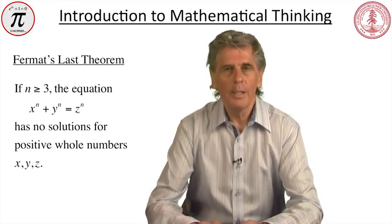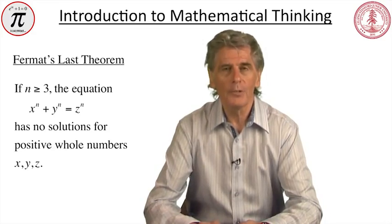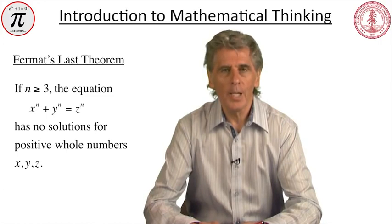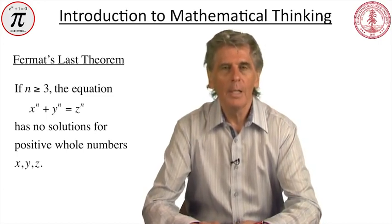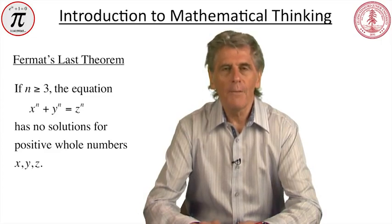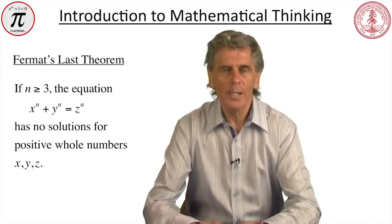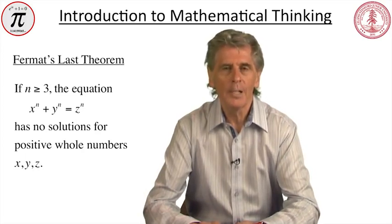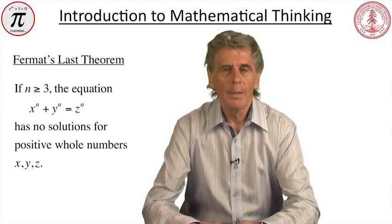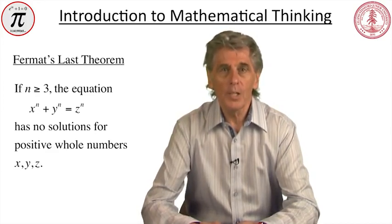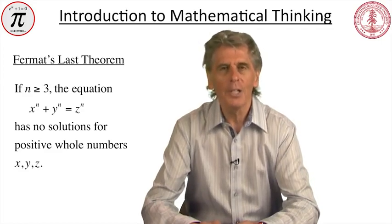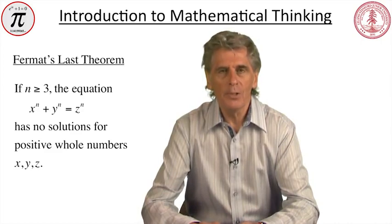Most mathematicians, myself included, lack the detailed domain knowledge to follow Wiles' proof ourselves. But it did convince the experts in the field — the field, by the way, is analytic number theory — and as a result, Fermat's ancient conjecture is now regarded as a theorem. Most proofs in mathematics can be read and understood by all professional mathematicians, though it can take days, weeks, or even months to understand some proofs sufficiently to be convinced by them. I've chosen the examples in this course to be understood by a typical student in a few minutes, or possibly an hour or so.